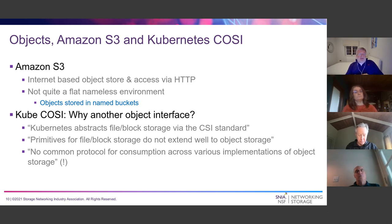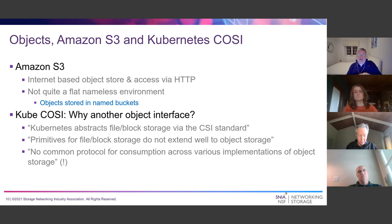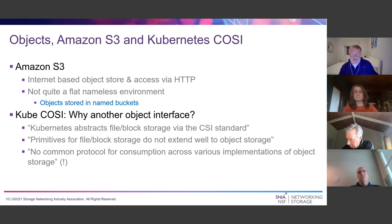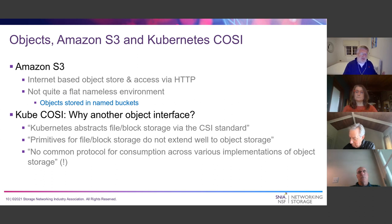The way we access objects — most people will have come across Amazon S3, an internet-based object store accessed via HTTP. Objects in S3 are stored in named buckets: you give your bucket a name, and then store objects inside it. The bucket and the object ID together give the unique placement of a particular piece of data. And we can build successful object APIs over the top of Amazon's S3.